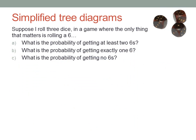Let me show you another example. Suppose I roll three dice in a game where the only thing that matters is whether or not I roll a six. What's the probability of getting at least two sixes, exactly one six, or no sixes?